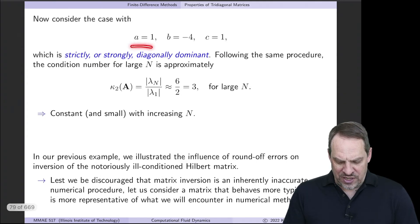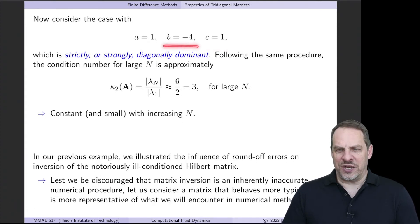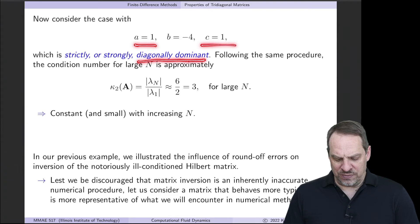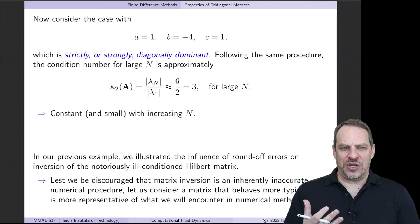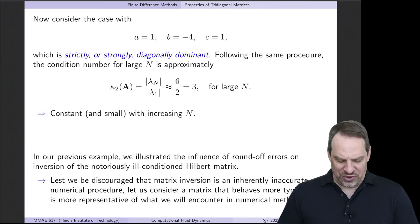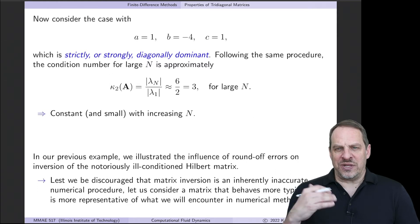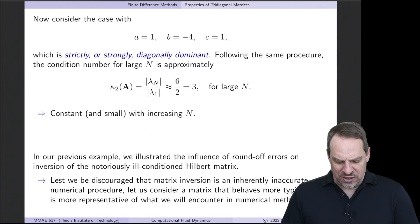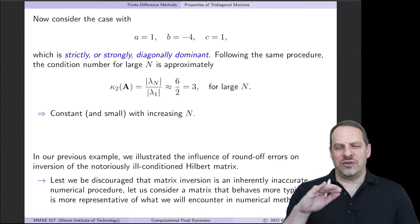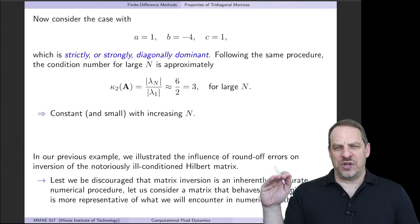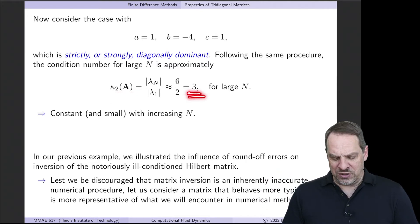Now let's take a look at a case where a=1, c=1 again, but now the b=-4. So in this case now, it is strictly or strongly diagonally dominant, because 1+1 is less than 4. We would expect this to be well-conditioned. We would not expect to have any large errors when we invert this or do any operations with this tridiagonal matrix. If we go through the same process with those cosines, we can get a large N estimate for the condition number. And in this case it would be 6 divided by 2, which is simply 3.